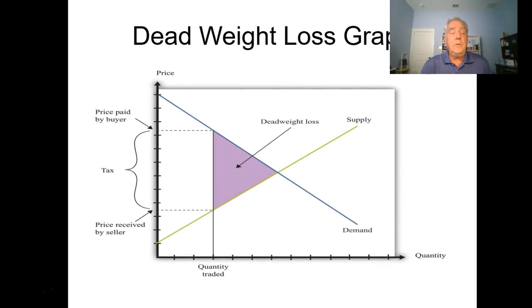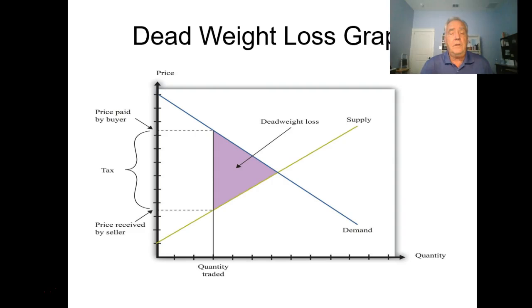Looking at the graph: if you look at the imposition of a tax applied to supply and demand curves, the demand curve is downward sloping to the right, the supply curve is upward sloping to the right, and at their intersection is equilibrium. That price is what you see on the shelf, but when you pay you must add a tax. The price received by the seller is lower than equilibrium and the price paid by the buyer is higher—that's dead weight loss on supply and demand.